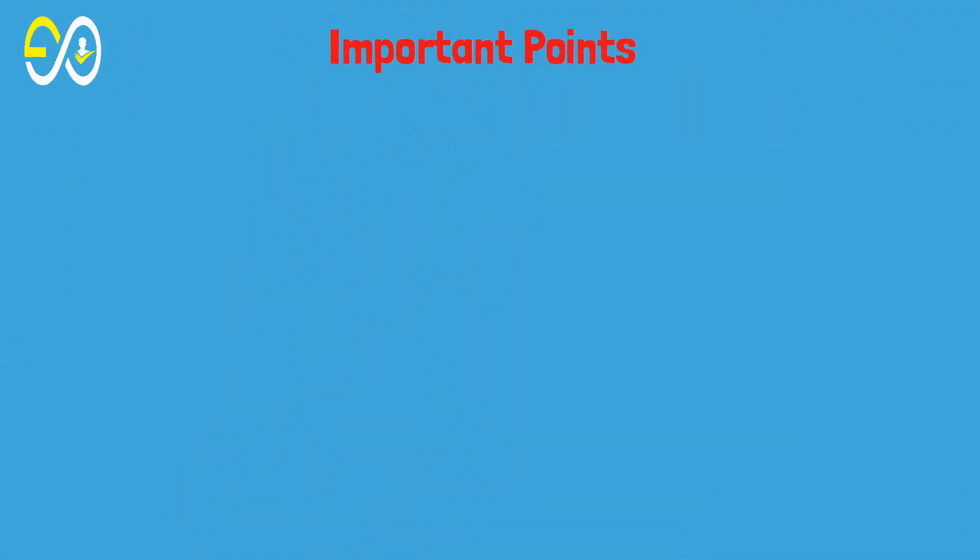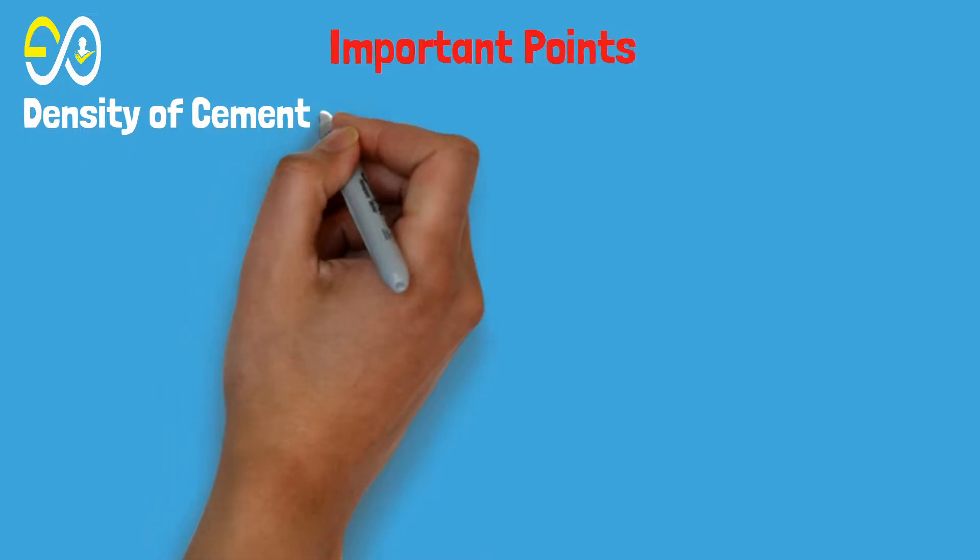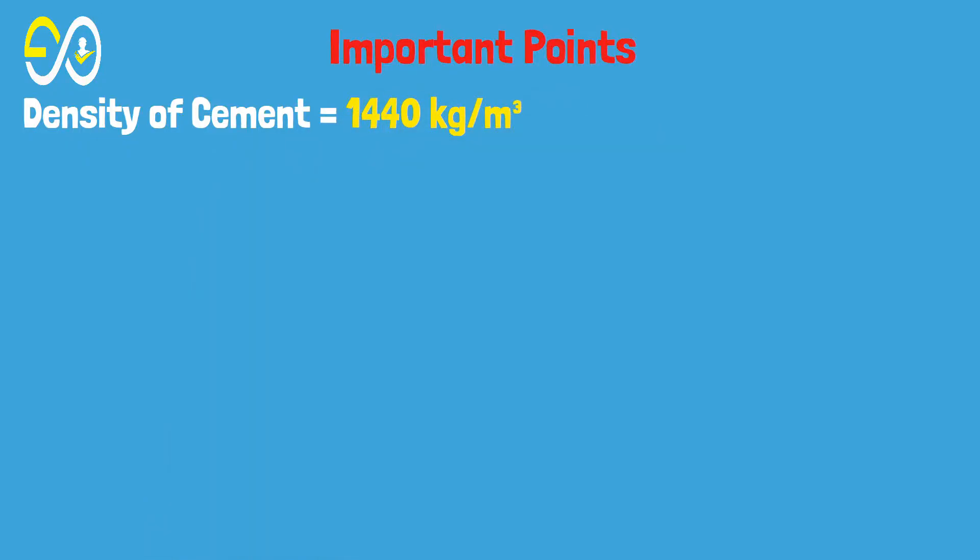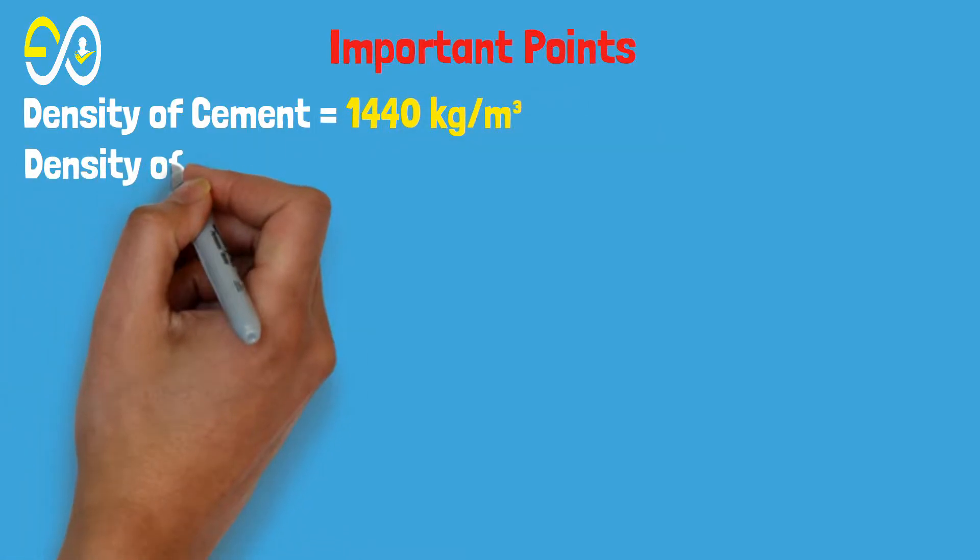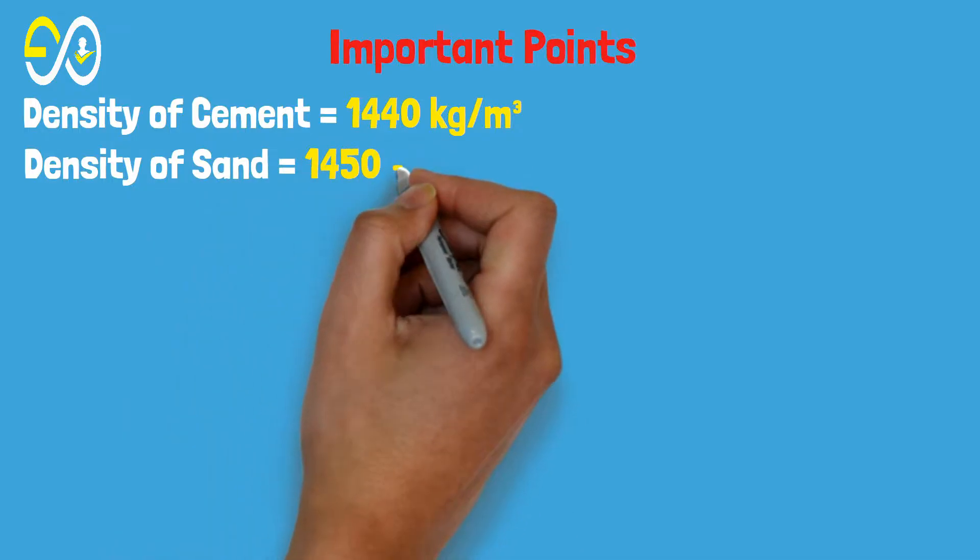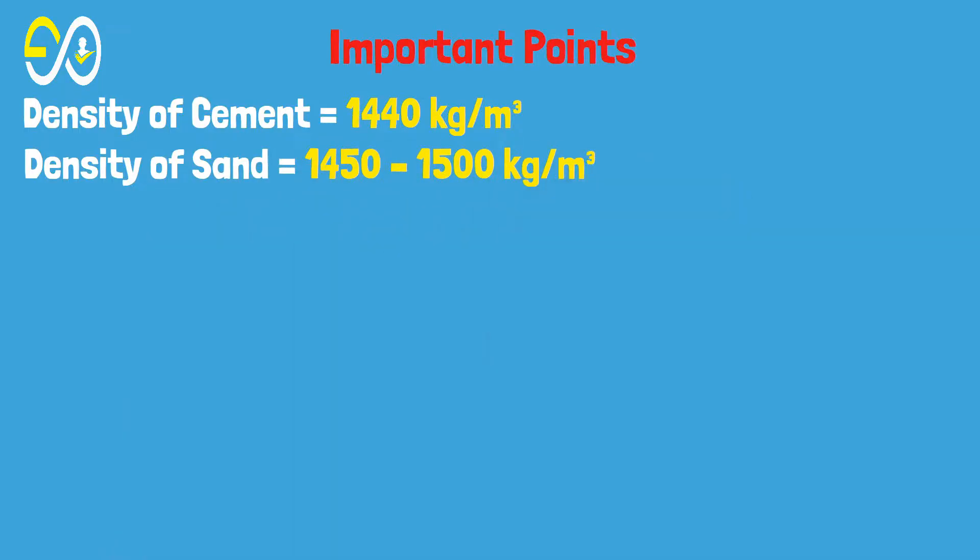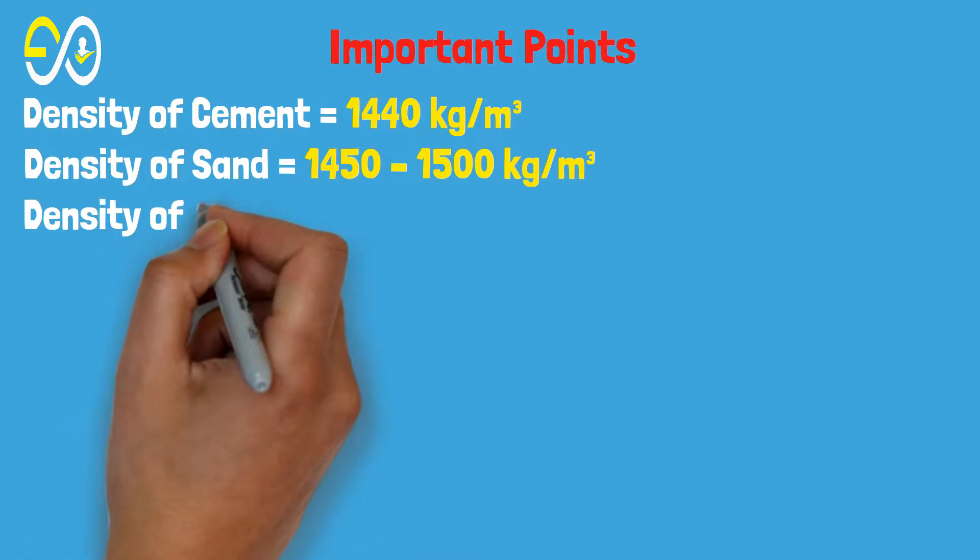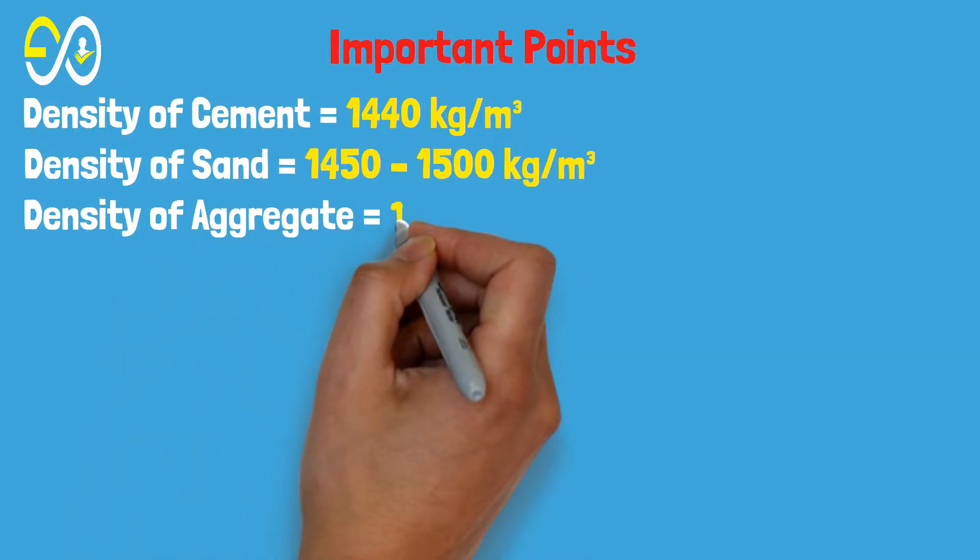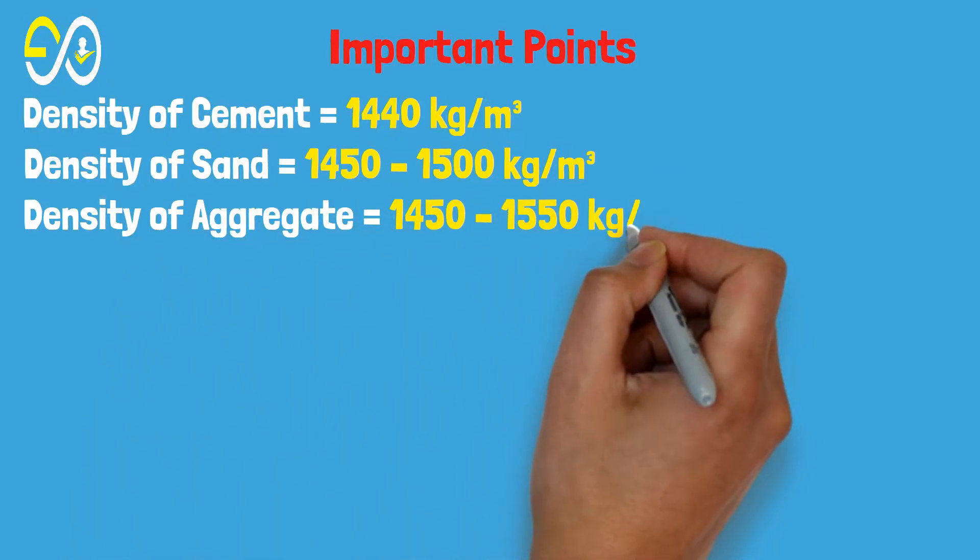Important Points: Density of cement equals 1440 kg per cubic meter. Density of sand equals 1450 to 1500 kg per cubic meter. Density of aggregate equals 1450 to 1550 kg per cubic meter.